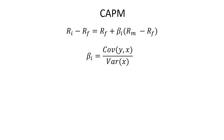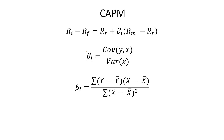Another way of writing this regression coefficient beta is: the sum of (Y minus Y-bar) times (X minus X-bar), divided by the sum of (X minus X-bar) squared. Understanding this equation is important because when we move toward D-CAPM, we need to know how CAPM's beta differs from D-CAPM's beta — how downside risk is measured differently compared to CAPM's systematic risk.